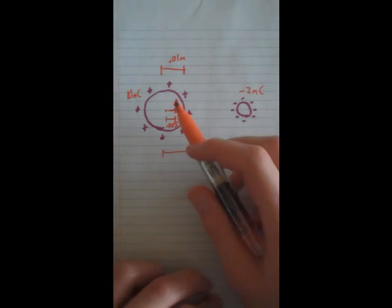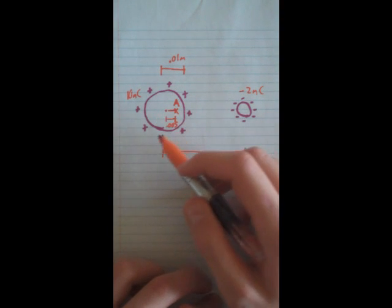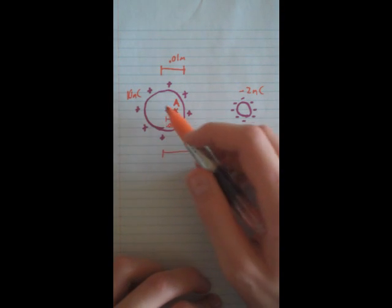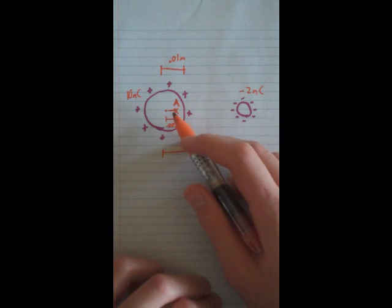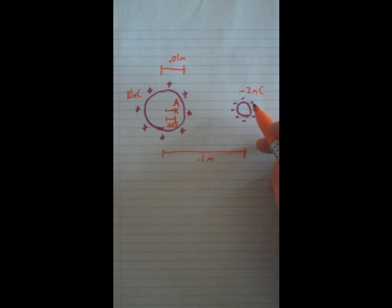Well, this is a pretty simple problem actually, because if something is inside a sphere, its electric field is always zero. So in other words, the only thing affecting this is the negative 2 nanocoulombs.